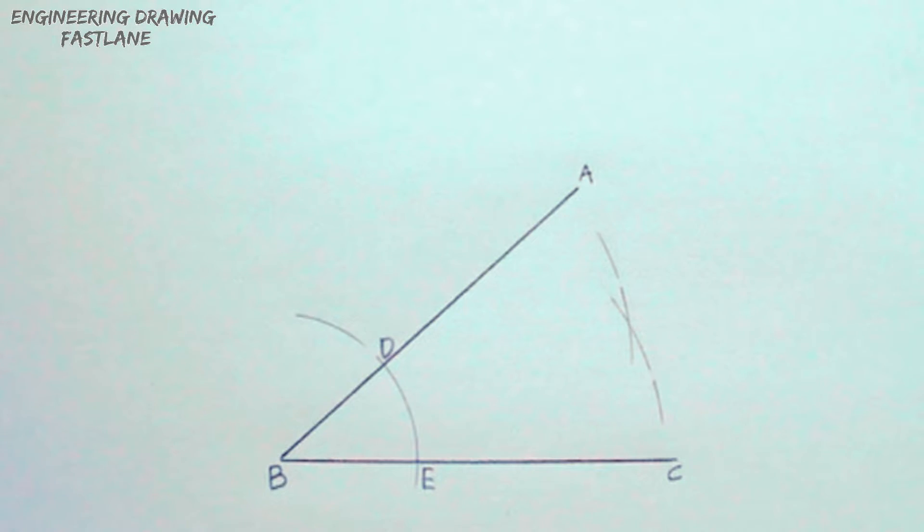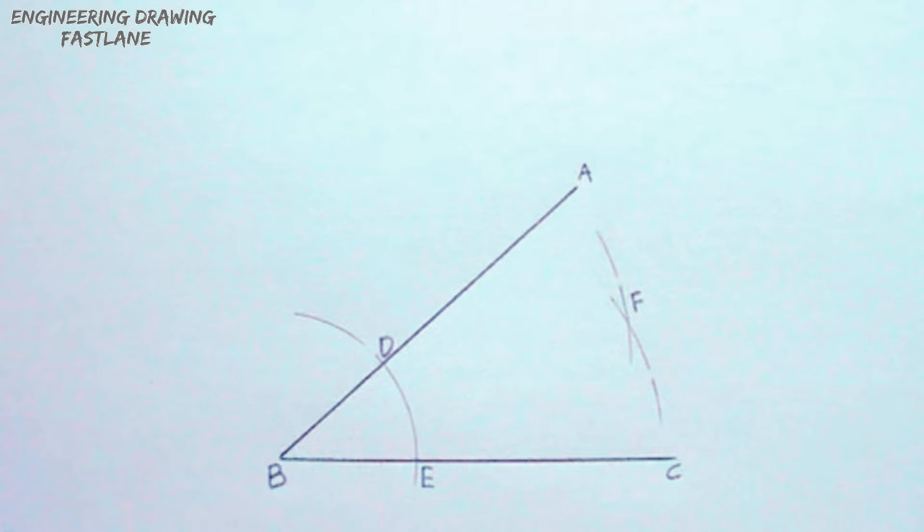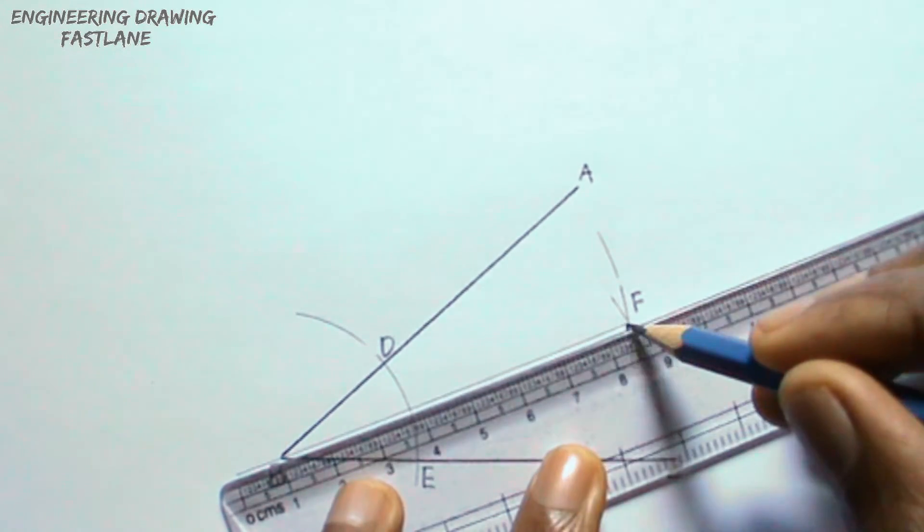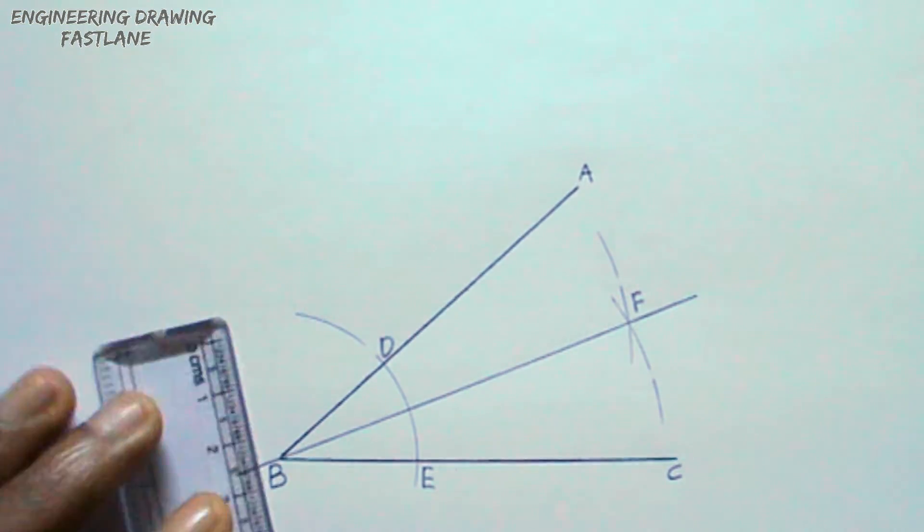The point where the arcs intersect should be labeled F. Draw a line to pass through point B and point F. Indicate the radius of the arcs.